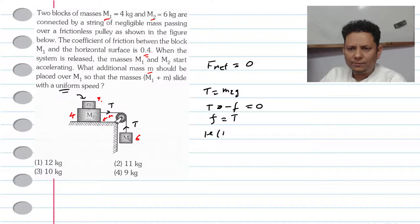The friction force equals tension. The friction force we can write as μ(m1 + m)g, which will be equal to m2g. The g cancels, giving us μ(m1 + m) = m2.